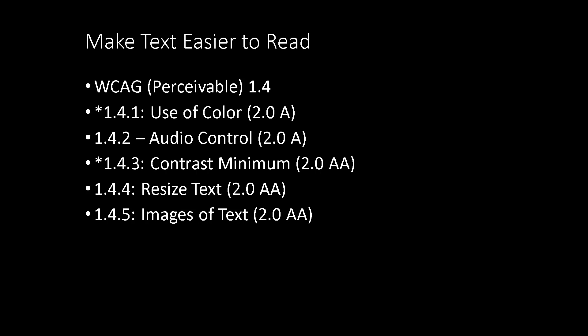Principle one, perceivability, may be a core foundation in ensuring accessible content. Some of the easiest strategies can be utilized to ensure that your content is accessible. For the purposes of this demonstration, we're going to focus on Standard 4 of Principle 1 — Web Content Accessibility Guideline 1.4, Make Text Easier to Read. The idea behind this standard is to ensure that there's always more than one way to perceive data.